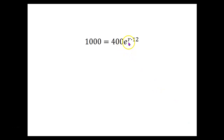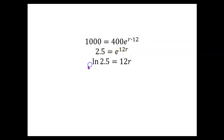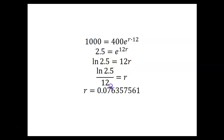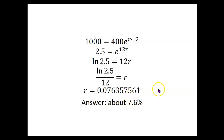To solve 1,000 = 400·e^(12r), divide both sides by 400: 2.5 = e^(12r). Take the natural log of both sides: ln(2.5) = 12r. Divide both sides by 12: r = ln(2.5) / 12. The calculator gives 0.076357561. To convert to a percent, move the decimal two places: r is about 7.6%.